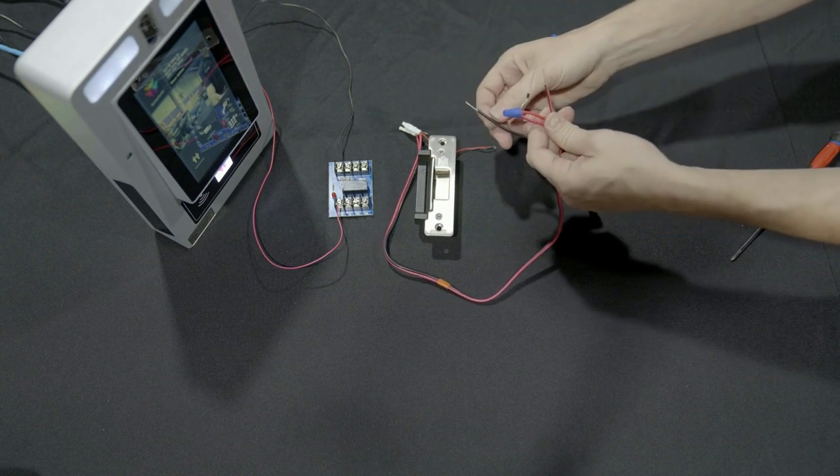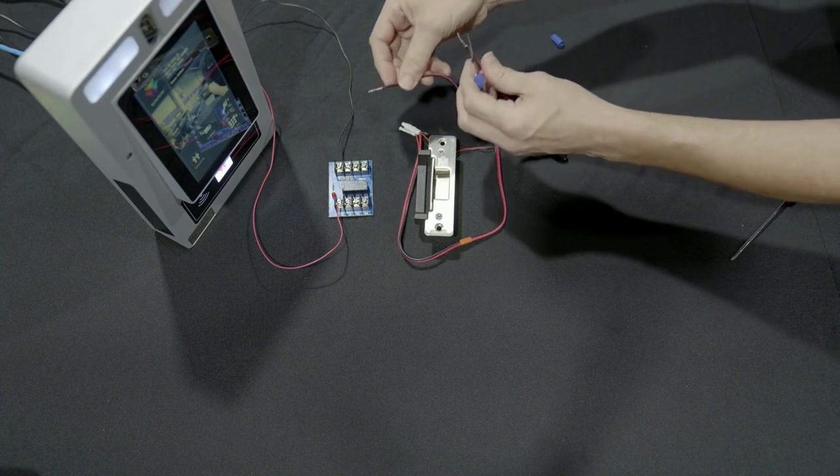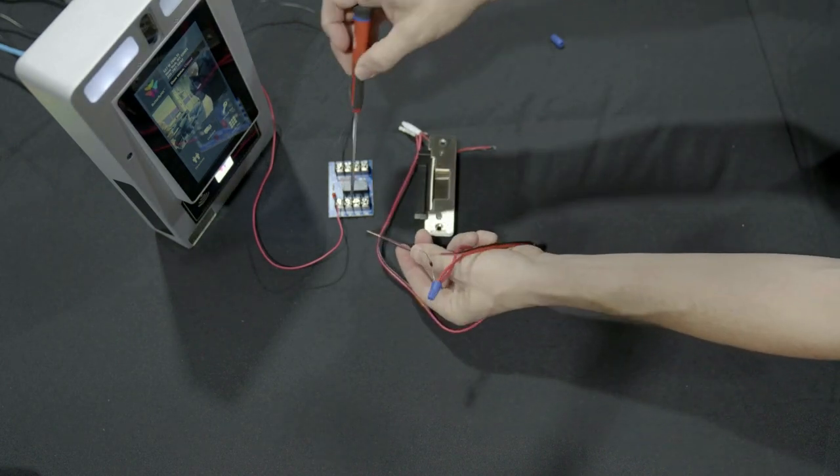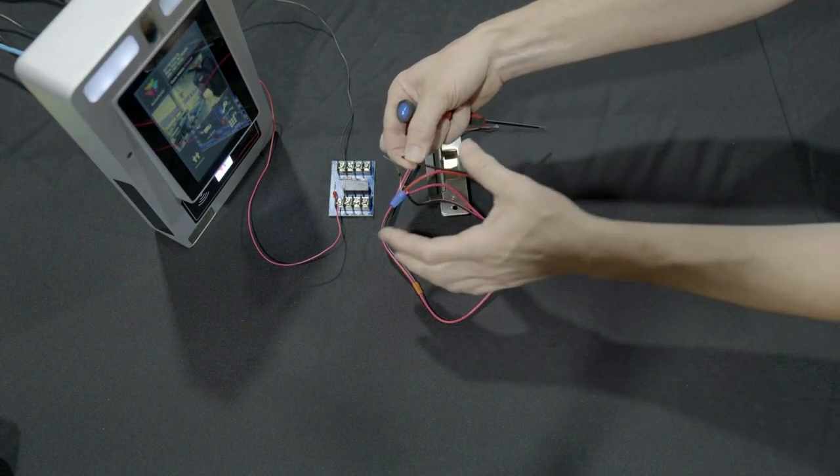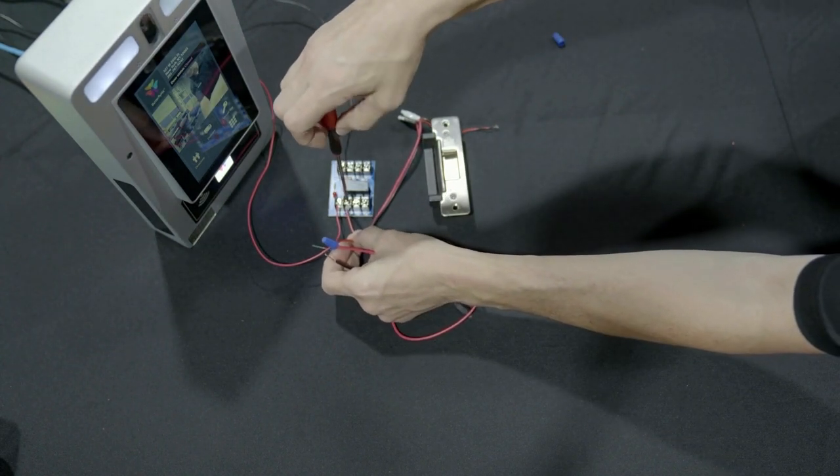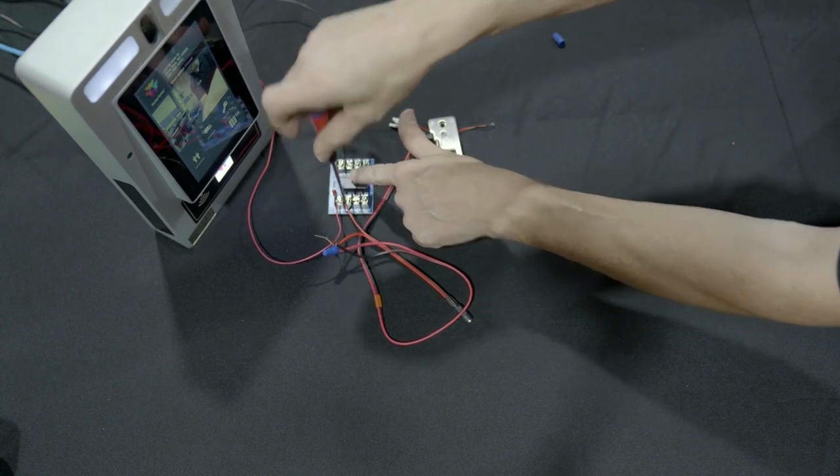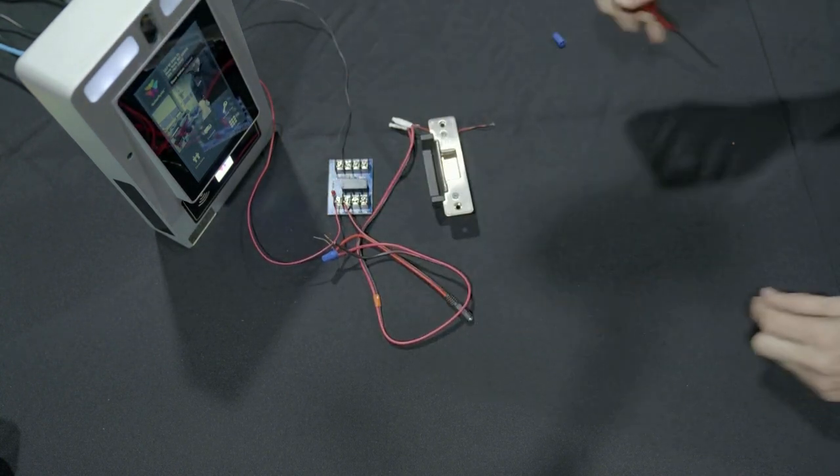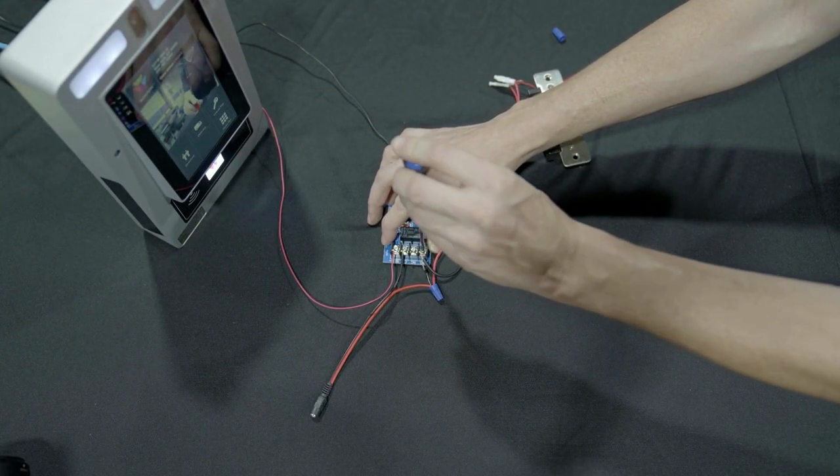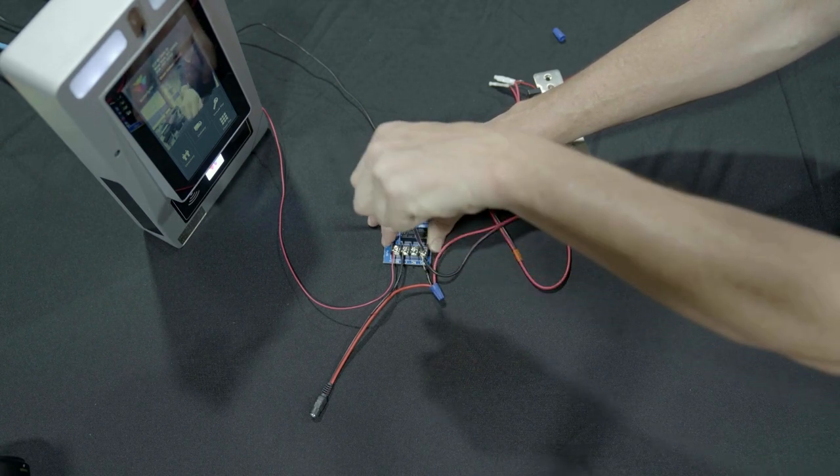We verify that both conductors that connect to the RB5 are ready to be terminated. Beginning with the conductor from the power adapter, we verify again that it is ready. Using the number 2 Phillips screwdriver, we open the common terminal on the relay's negative side. Insert the conductor into the terminal. Close the terminal using the number 2 Phillips screwdriver. Repeat the process with the conductor from the strike that goes into the normally open terminal. Verify both conductors are safely and securely connected.